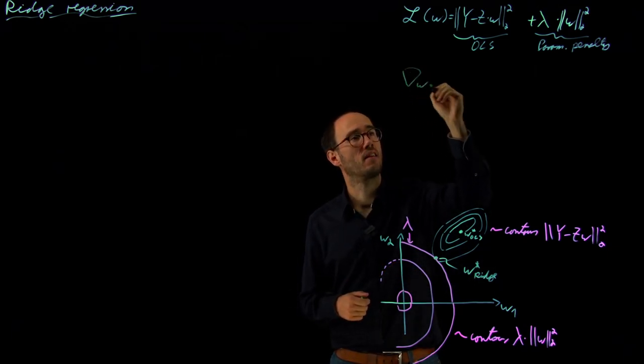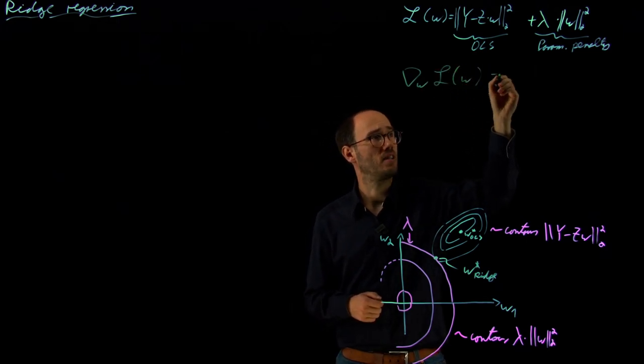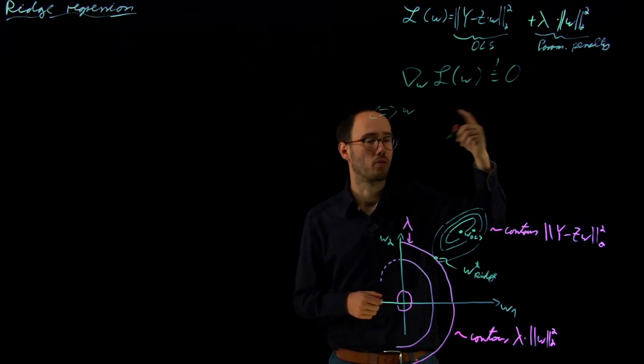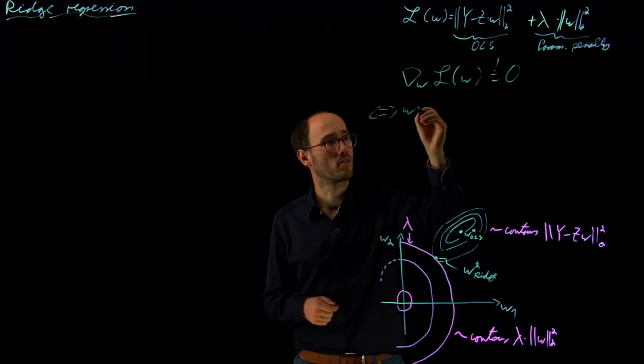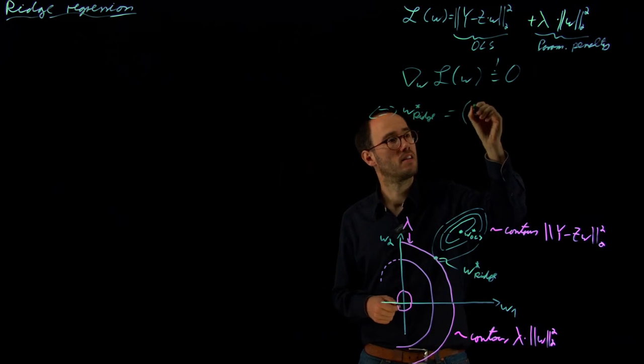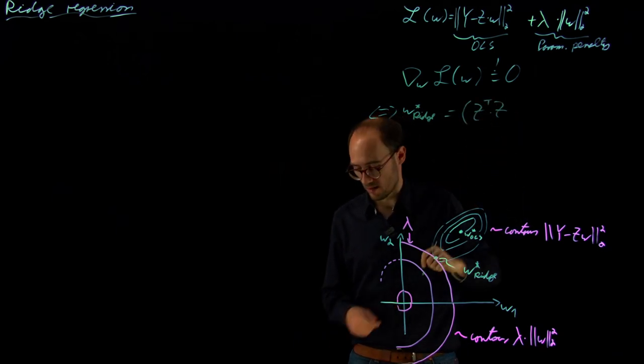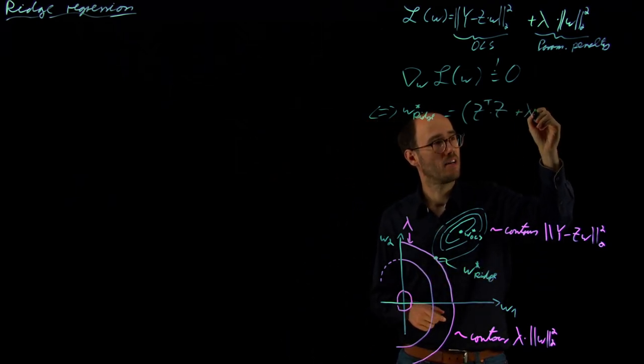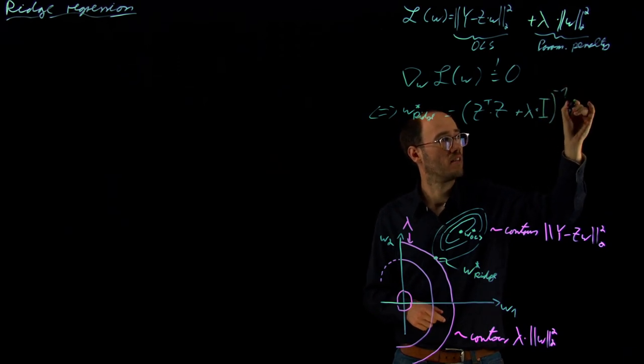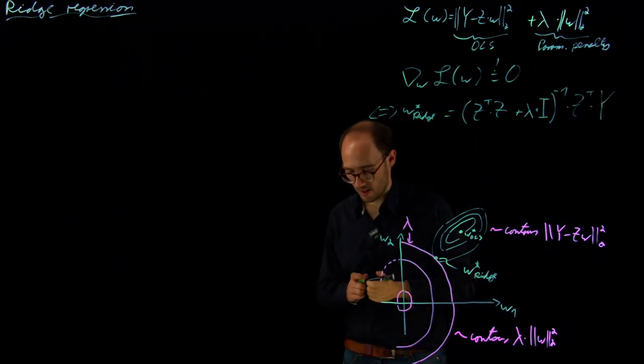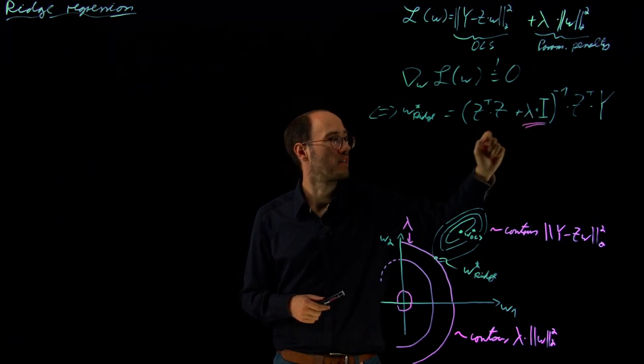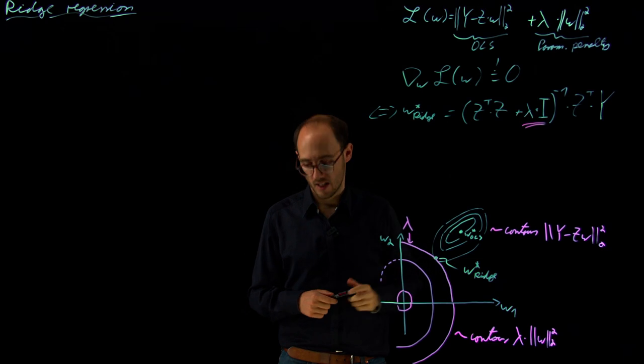If we do so, I'm not going through the entire derivation again because it's straightforward, we would get w*_ridge for the ridge regression problem. This would become (Z^T Z + λI)^(-1) Z^T Y. So our usual regressor matrix multiplication Z^T Z plus lambda, our penalty weighting term, times the identity matrix I, inverse, times Z^T times Y. The only new thing compared to the ordinary least squares problem is this weighting of λ times the identity matrix in this inverse calculation, and we can still calculate that in closed form.